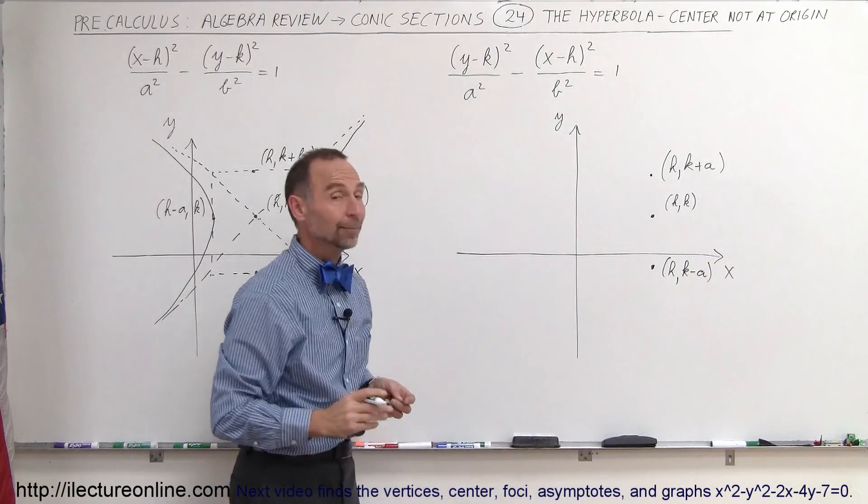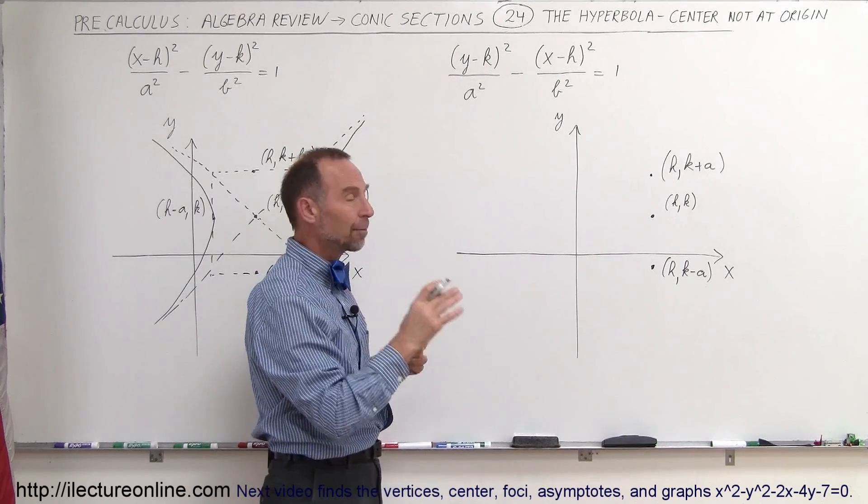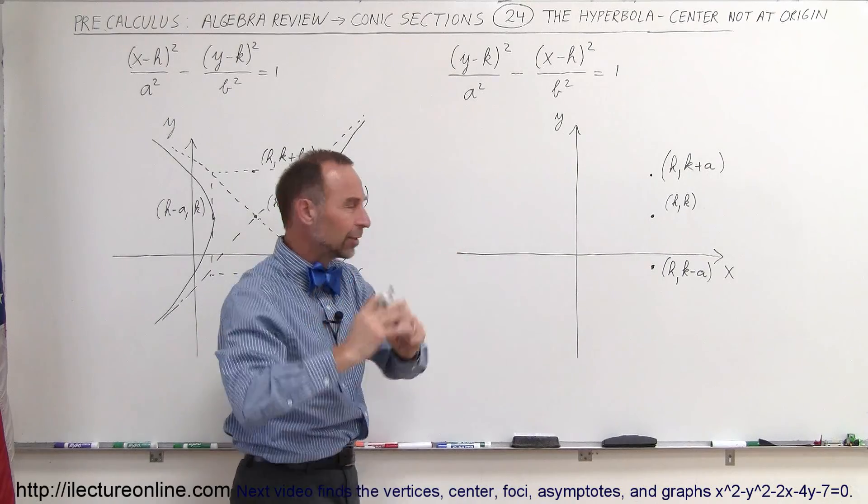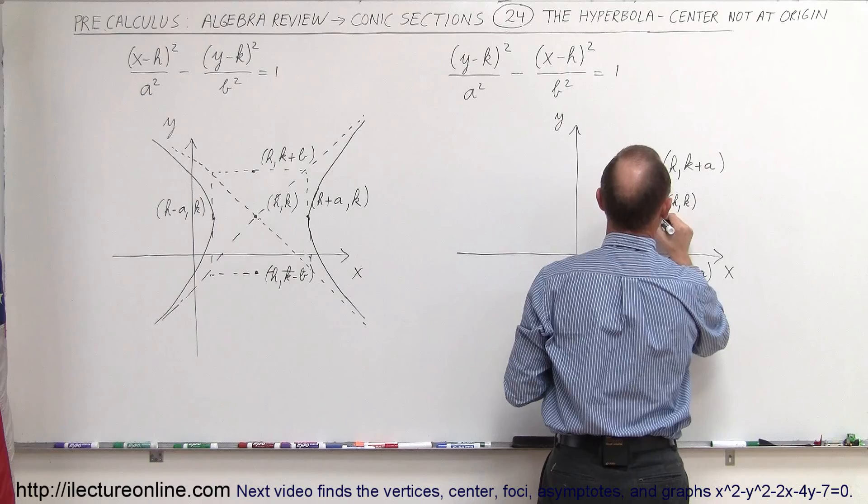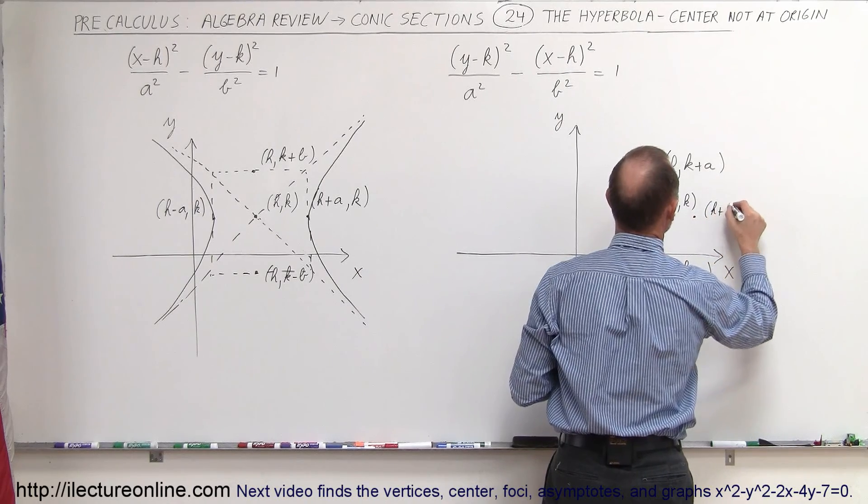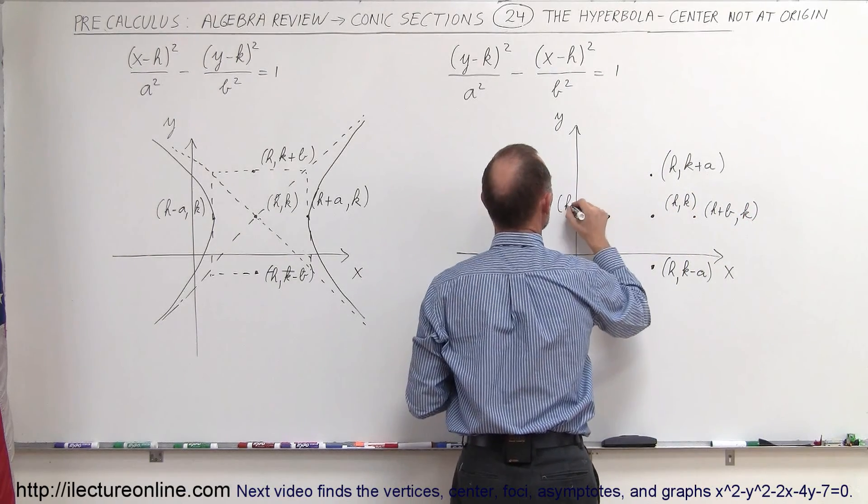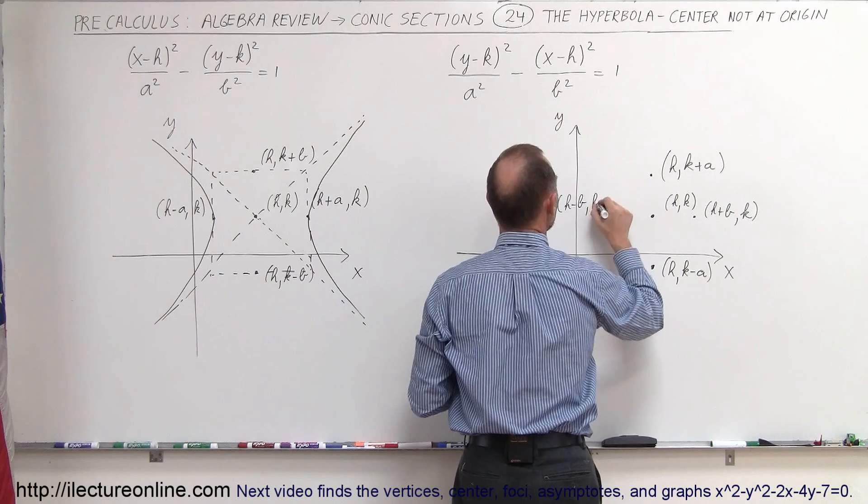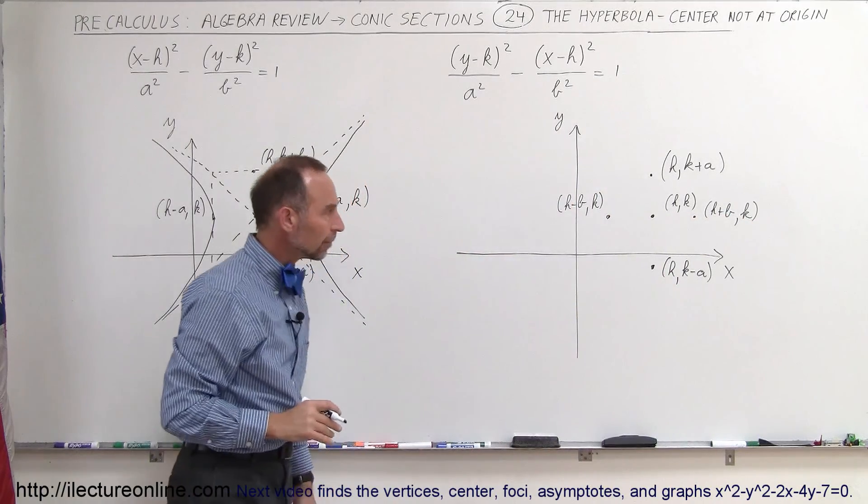All right. Now, in the horizontal direction, the two points that will not touch the hyperbola, but will be used to direct the orientation of hyperbola and know how to draw it - so here we have the point that would be h plus b, and k for the y value, and over here we have the point that would be h minus b and the k value, with the b, of course, being the x direction.